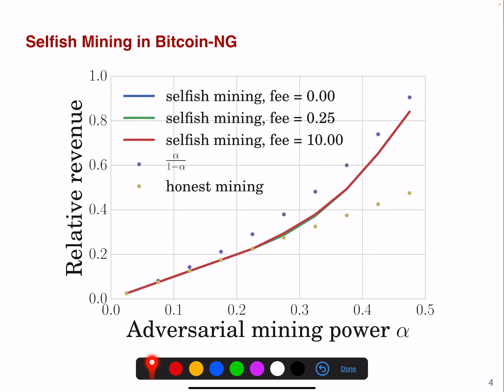If you look at selfish mining across the different fee models, this line is for Bitcoin-NG, this is the line for selfish mining, and this is the line for optimal selfish mining. We can see there is a bit of a change here.